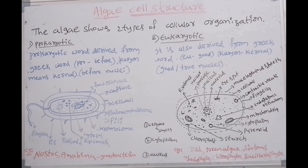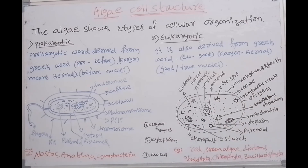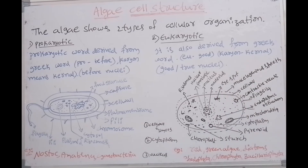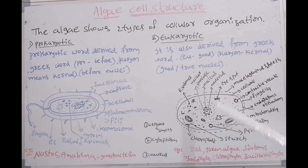In the cytoplasm, all cell organelles are present, like ER, mitochondria, pyrenoids, starch granules, ribosomes, chloroplasts. Eye spot is also present. Flagella are developed from the eye spot, and these flagella are used for locomotion or movement. In the nucleus, chromosomes are present, and the nucleus is covered with a nuclear envelope.